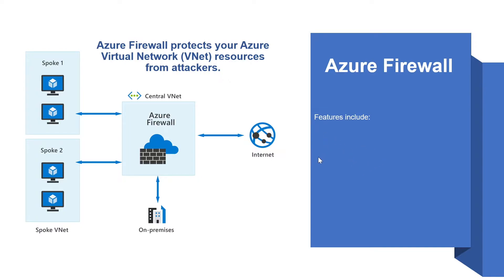Let's look at some of the key features of Azure Firewall. Azure Firewall provides built-in high availability and availability zones. High availability is built-in, so there is nothing to configure. Also, Azure Firewall can be configured to span multiple availability zones for increased availability. The next feature is outbound SNAT and inbound DNAT.